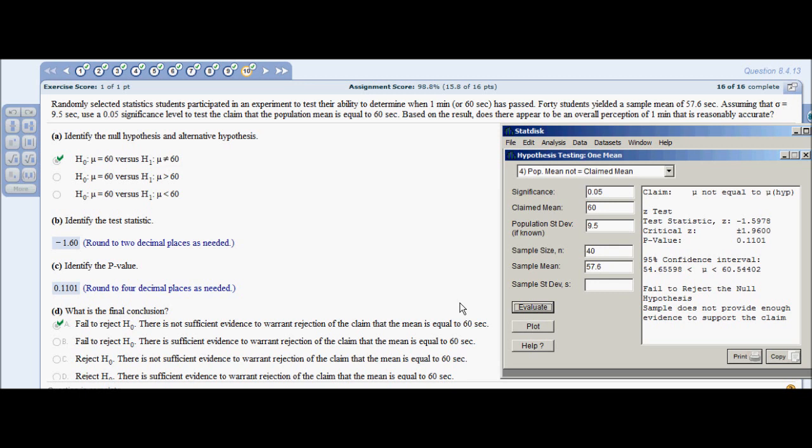Identify your inputs: your significance level, sample size, sample mean, and population deviation are all named directly. The claim mean is also named directly, and the question you're testing is 60. So evaluate and get your output. You're going to fail to reject the null in this one as no evidence.